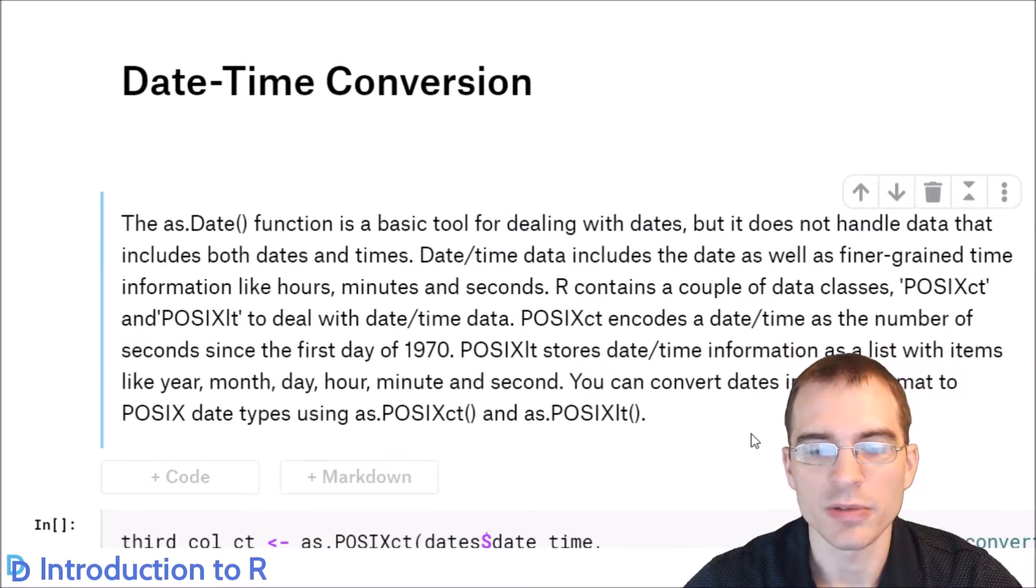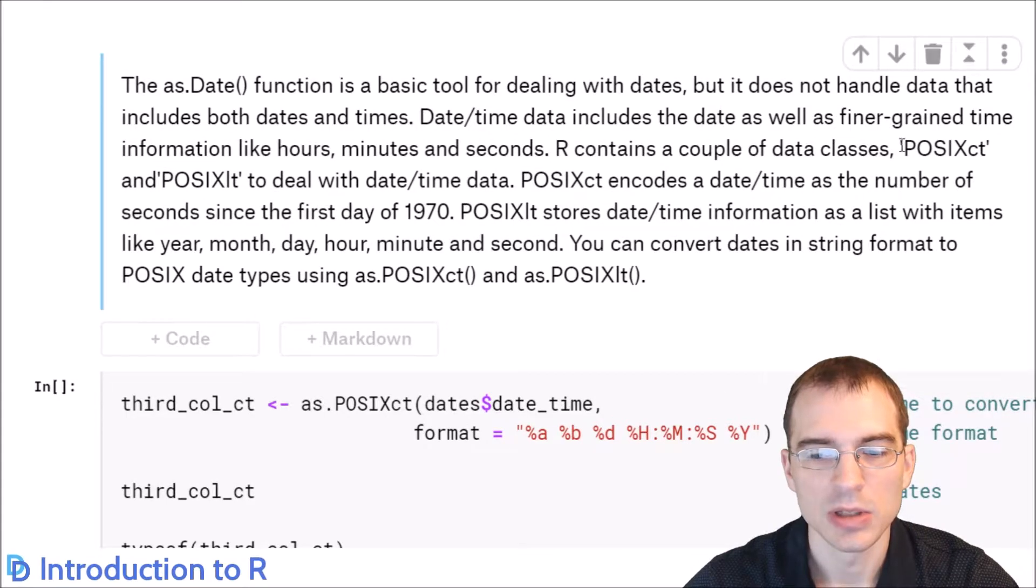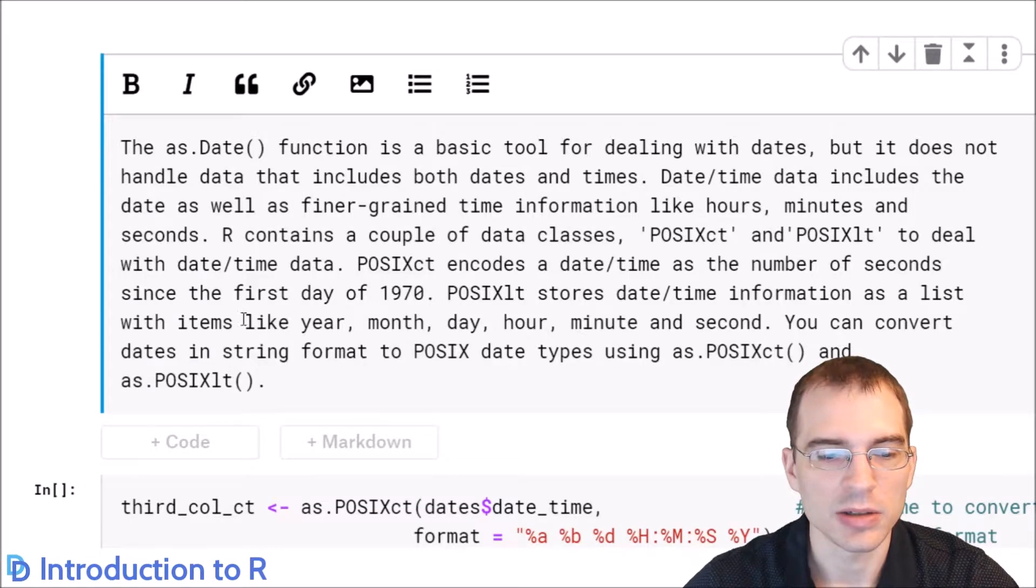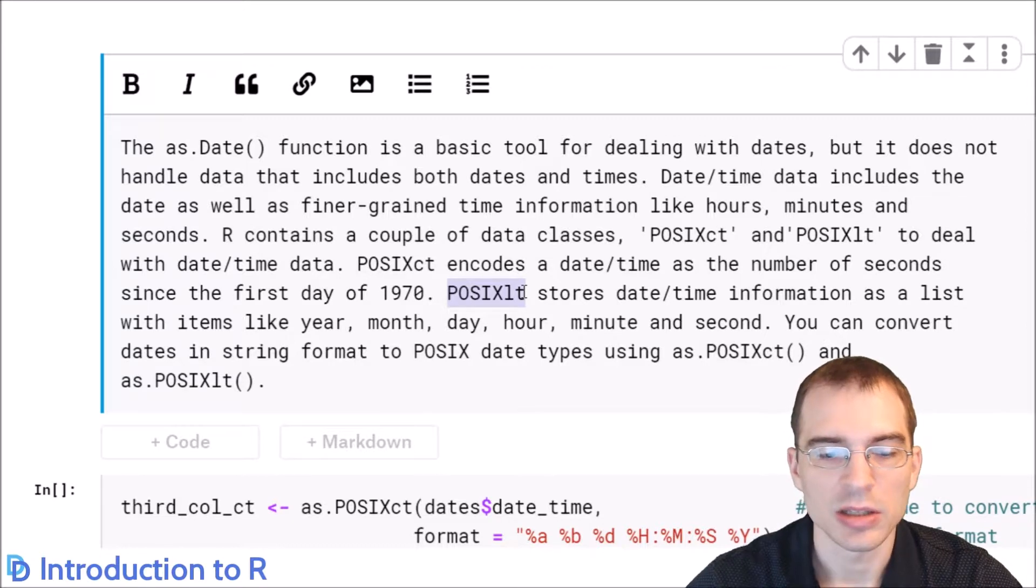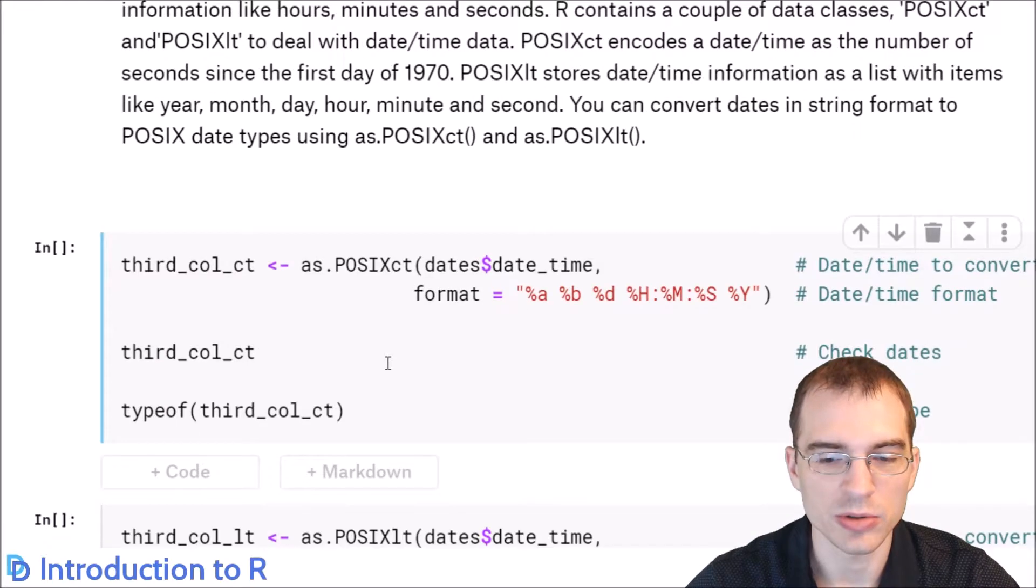For that, you're going to want to convert to a date-time format. R contains a couple different classes for dealing with date times. One is called POSIXct. The other is called POSIXlt. They're similar, but POSIXct encodes the date and time as the number of seconds that have passed since the first day of 1970. POSIXlt stores date and time as a list with items like year, month, day, hour, minute, second, etc. You can convert dates in string format to POSIX date formats using either as.POSIXct or as.POSIXlt, depending on which type you want.